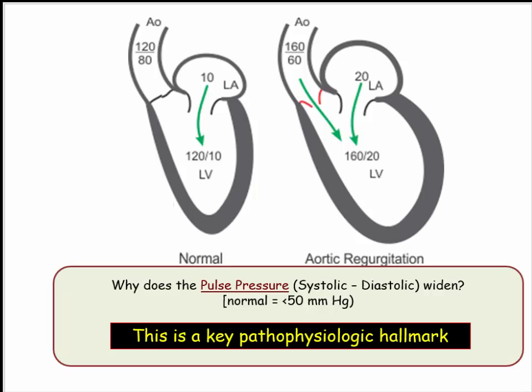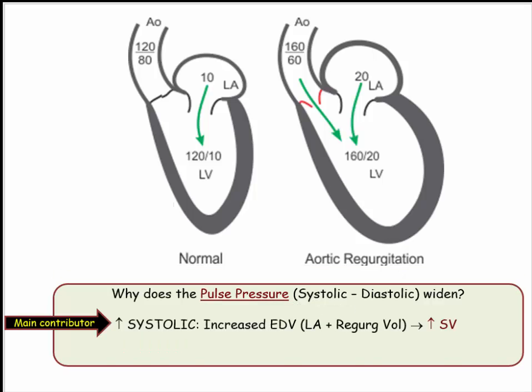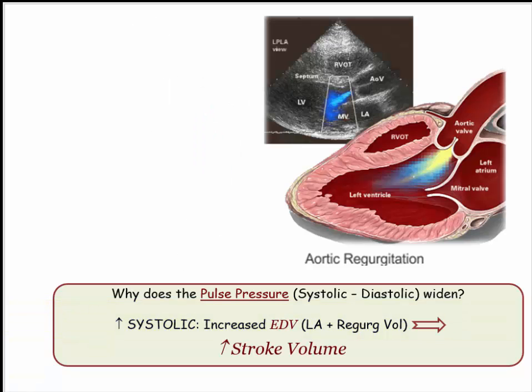So question one: why is the pulse pressure widened? The pulse pressure can widen either as a result of increased systolic pressure, decreased diastolic pressure, or both. In the case of aortic regurgitation, both events occur, but it is the increase in systolic pressure that is the main contributor to the widened pulse pressure. Aortic regurgitation is associated with an increase in stroke volume resulting from the regurgitant volume plus the LA volume.